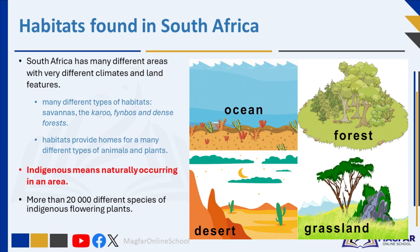These habitats range from savannas to coastal regions and dense forests, providing homes for many different types of animals and plants. Some of South Africa's habitats support iconic species such as lions, elephants, rhinoceroses, and a rich variety of plant and bird species. South Africa has a wide variety of indigenous plants and animals. Indigenous means naturally occurring in an area — plants and animals that have always lived there, originally from South Africa and not imported from other countries. South Africa has more than 20,000 different species of indigenous flowering plants, and people come from all over the world to see them.